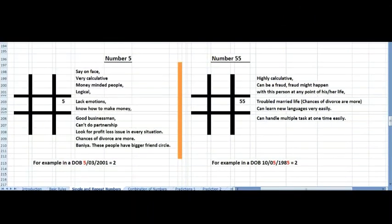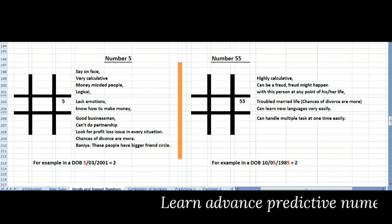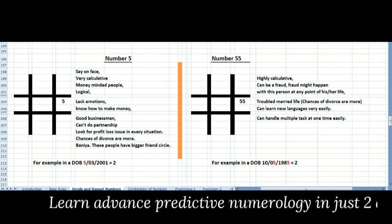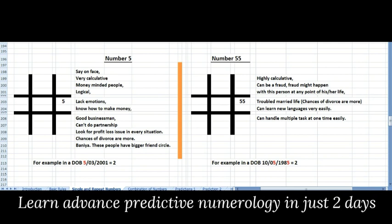Hello everyone, welcome to my session on number 5. Today we'll talk about the presence of number 5 and double 5 in a person's date of birth - what happens when single 5 comes, and when it becomes repeated in a person's DOB.